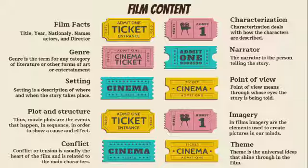F: Characterization — characterization deals with how the characters are described. G: Narrator and point of view — the narrator is the person telling the story. Point of view means through whose eyes the story is being told.